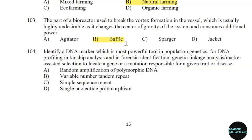104th question: Identify a DNA marker which is the most powerful tool in population genetics for DNA profiling in kinship analysis, forensic identification, genetic linkage analysis, and marker-assisted selection to locate genes or mutations responsible for a given trait or disease. Correct answer: Option C — Simple sequence repeat.